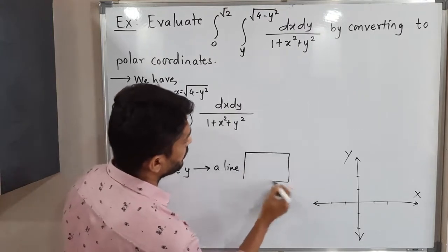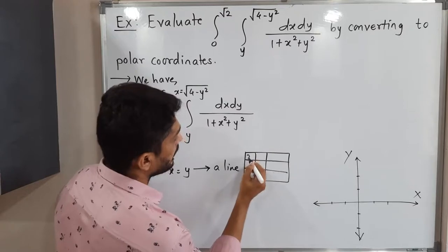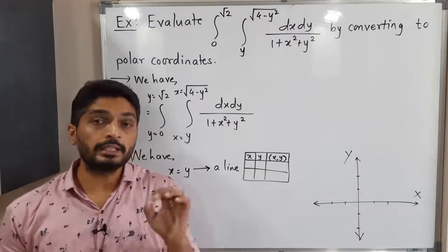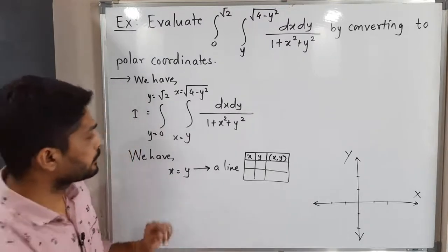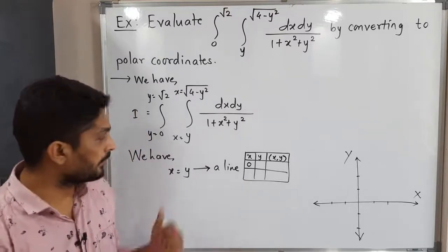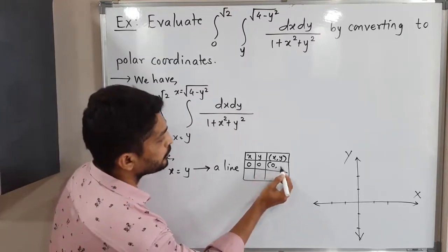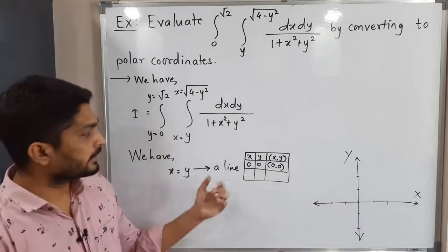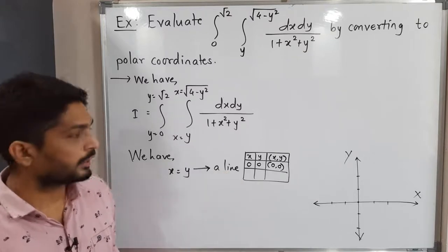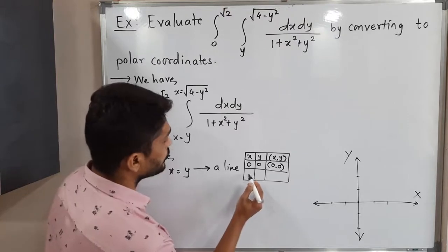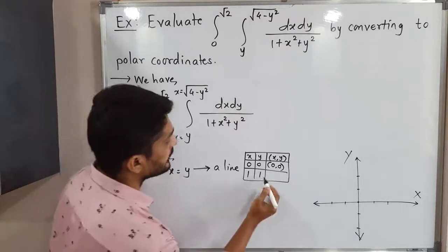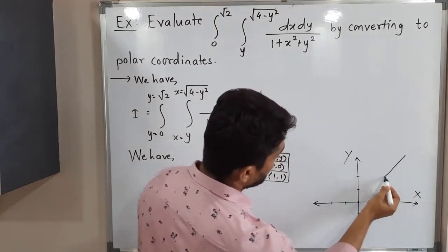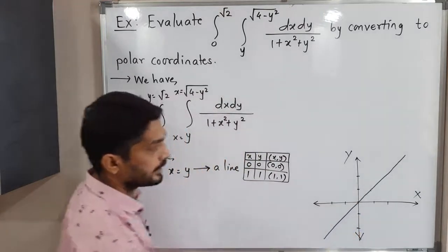To find the line, we draw a table. To find any line, we need any two points on it. I will put x equal to 0 first: if x equals 0, then y equals 0, so the first point is (0, 0) — this line passes through the origin. Next, I put x equal to 1: if x equals 1, y equals 1, so the point is (1, 1). This line passes through these two points, giving us the line x equals y.